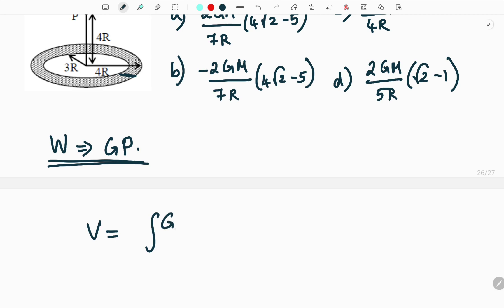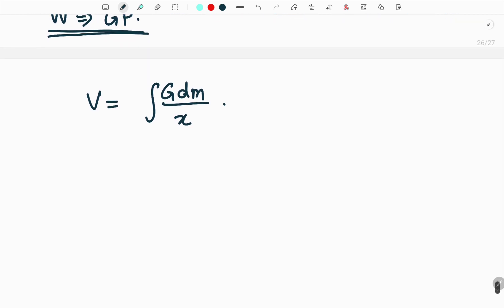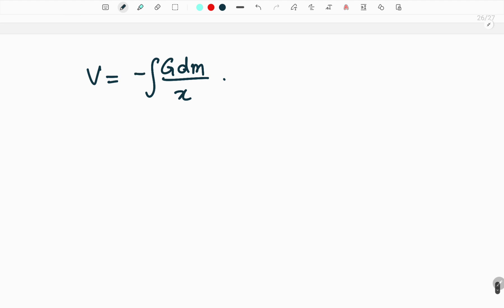So we have to integrate G dm by x. Now what is this G dm and x? So G represents the universal gravitational constant, it is a constant. dm represents the mass of a small element. I will put a negative sign here.